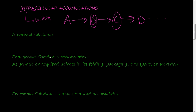The second classification is an endogenous substance that accumulates - endogenous means made within - and an example is a genetic or acquired defect in its folding, packaging, transport, or secretion. The third classification is an exogenous substance that is deposited or accumulates within the cell. Exogenous means from without. Let's go through each one of these.